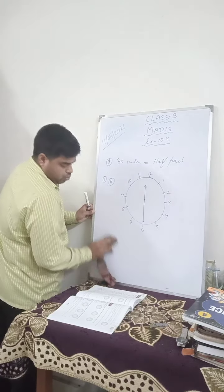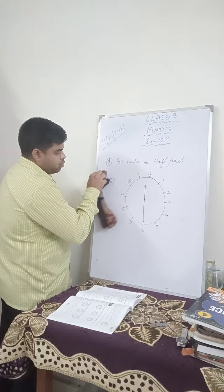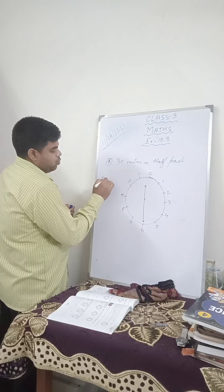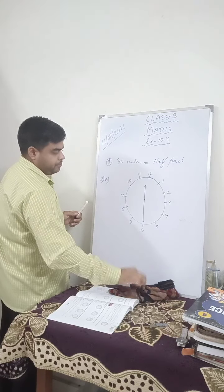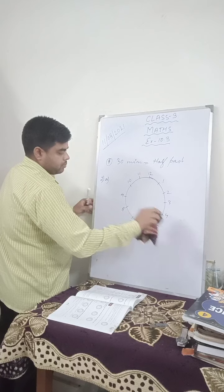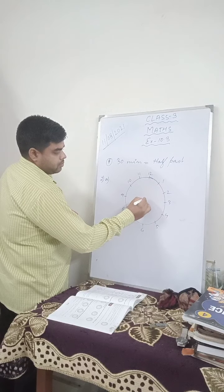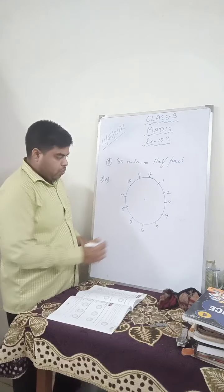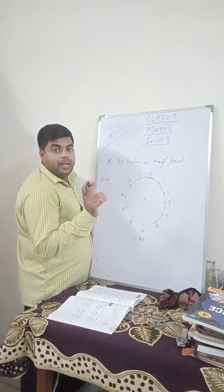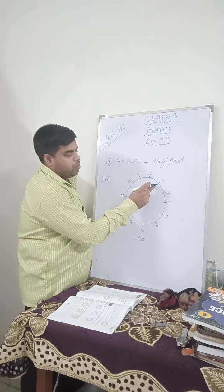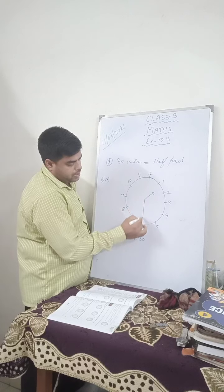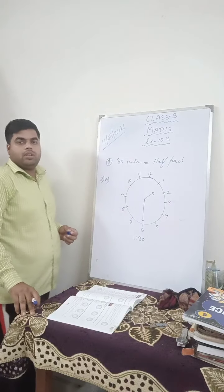Suppose question number 2A — in question number 2A, they have said 1:30. So the hour hand will be in between 1 and 2, and the minute hand will face 6. This is your time.